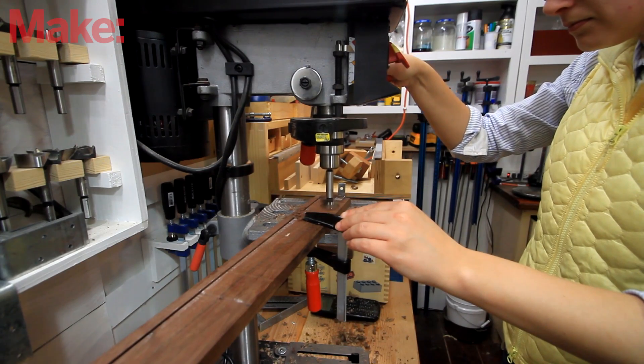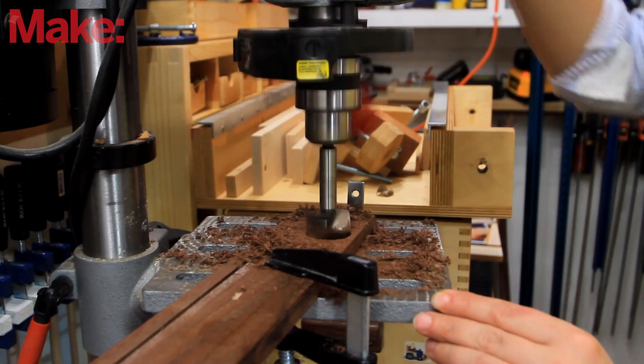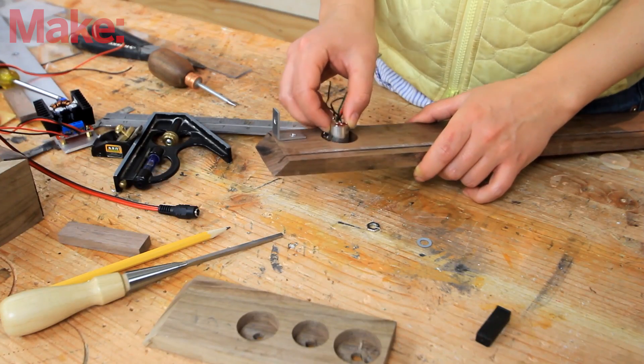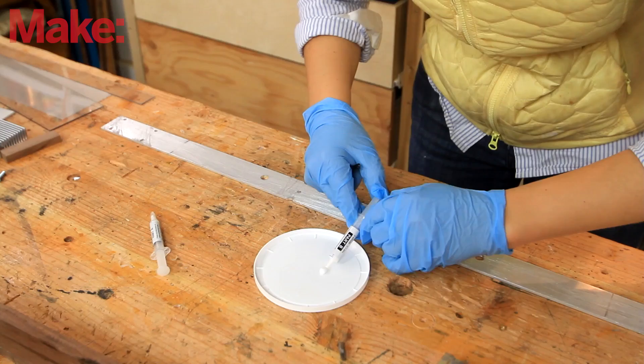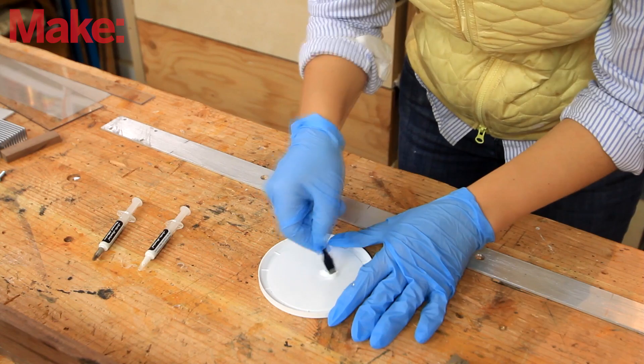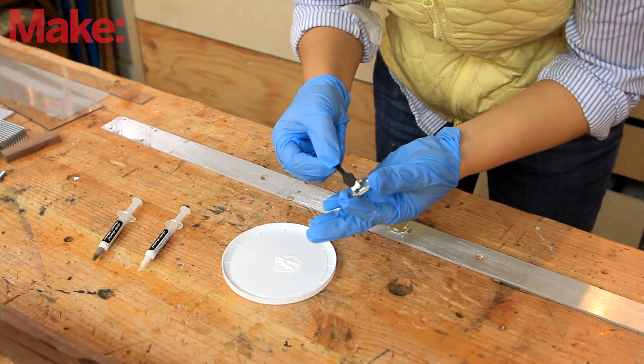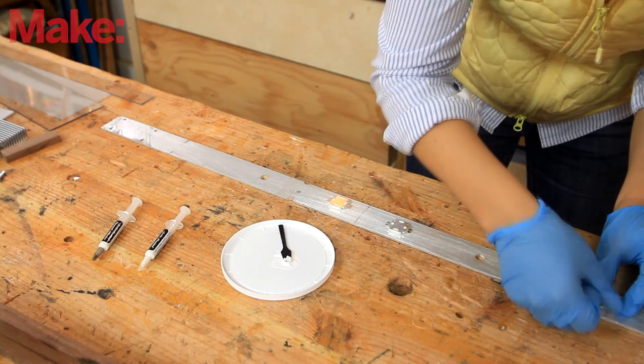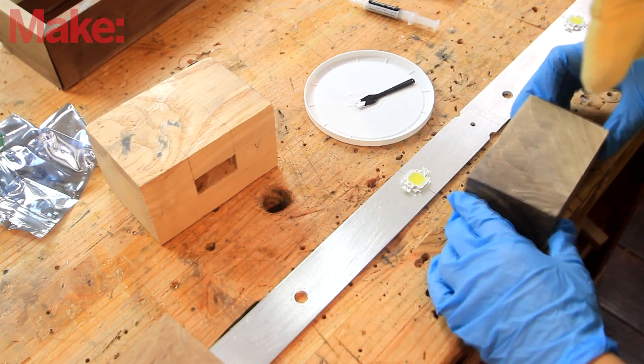Then I need to drill a hole in the wood for a switch so I can turn the device on or off. Securing that with a nut. Another thing to do here is to glue the LEDs onto the aluminum with some thermal adhesive. Then adding some wood to provide clamping pressure.